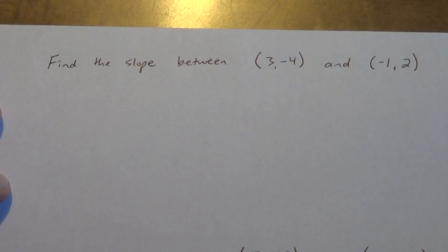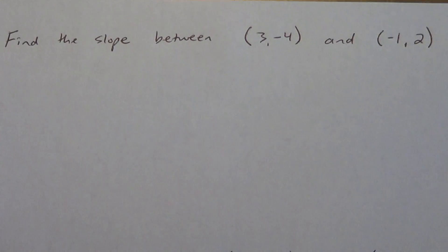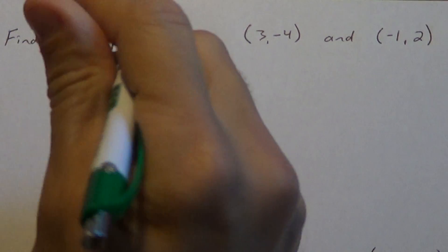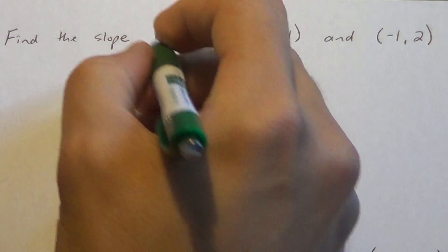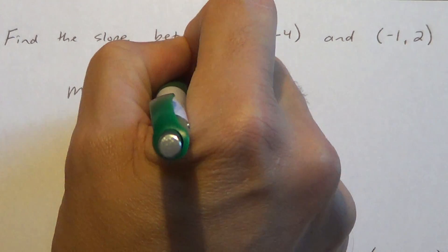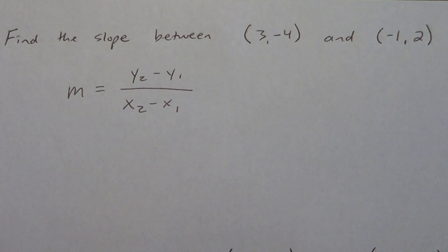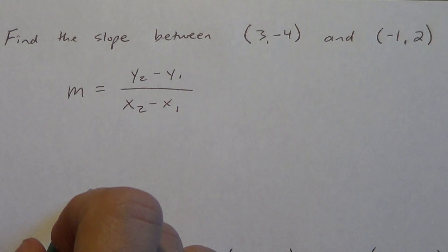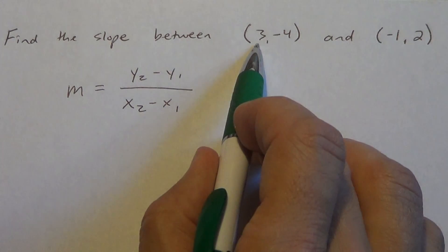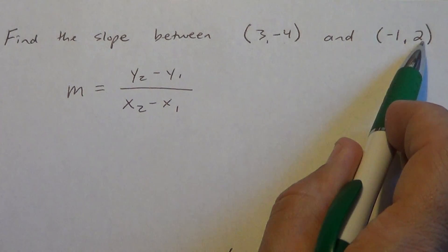I am asking you to find the slope between (3, -4) and (-1, 2). So you've got to remember your slope formula. Slope equals — m equals y2 minus y1 over x2 minus x1. Remember those 2's and 1's are subscripts, they're not powers, it's not y squared. y2 means the second y value. This is an x and a y, this is an x and a y.